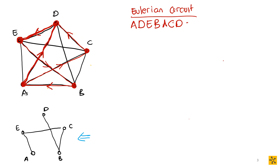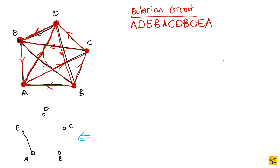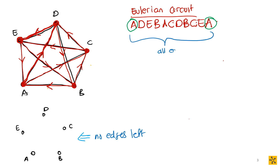Now at D, there's only one option, so we go D to B. Then B to C, C to E, and finally E to A. That completes the Eulerian circuit: A → D → E → B → A → C → D → B → C → E → A. It's a circuit because the beginning and end are the same vertex, and all edges of the graph are covered — no edges remain.